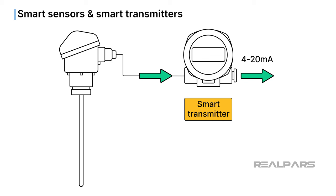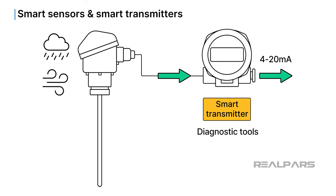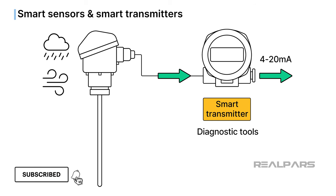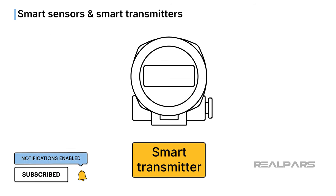Some smart transmitters are equipped with various diagnostic tools to detect sensor faults. Is it possible for sensors to be faulty? Absolutely! Sensors are constantly exposed to harsh physical environments and often fail over time. Smart transmitters can perform a variety of sensor diagnostic tests.